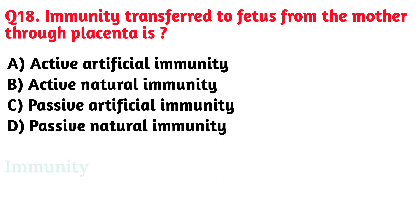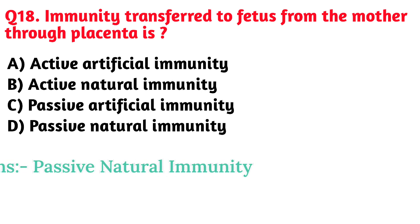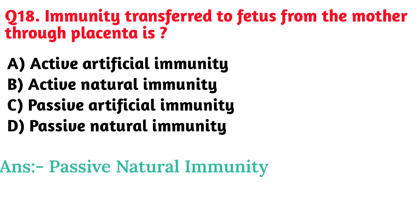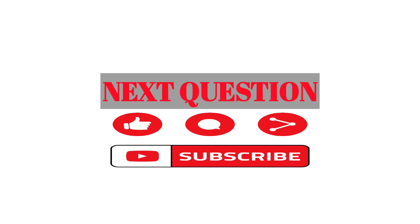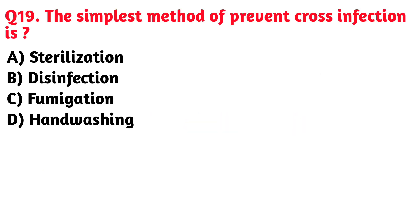Next question: Immunity transferred to fetus from the mother through placenta. Option D. Passive natural immunity is the correct answer.